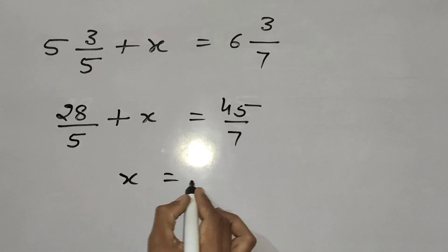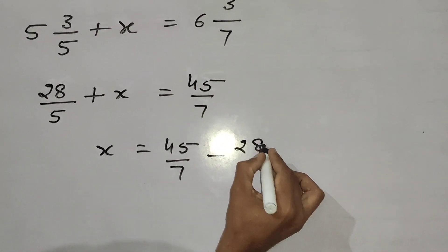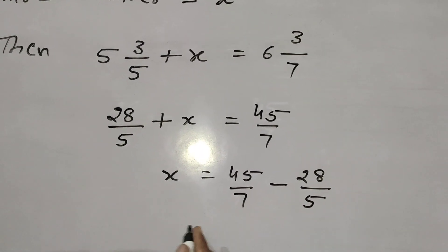And X is equal to 45 by 7 minus 28 by 5. Now, take the LCM, 5 and 7.